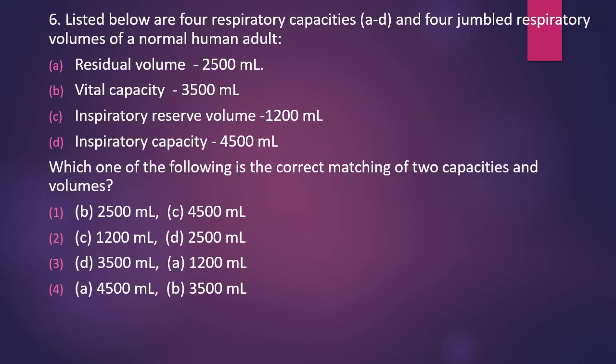Question number six: listed below are four respiratory capacities and four jumbled respiratory volumes — residual volume, vital capacity, inspiratory reserve volume, and inspiratory capacity. The numbers given next to them are jumbled. Which one of the following is the correct matching of the two capacities and volumes? You can see the options for yourself. The correct answer is option 3 — inspiratory capacity is 3500 ml and residual volume is 1200 ml.